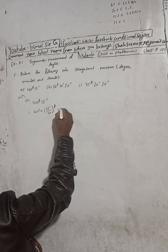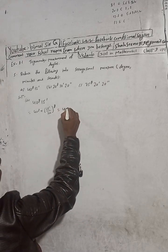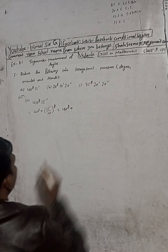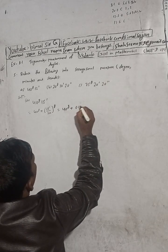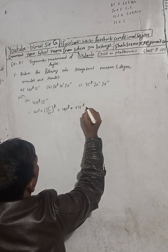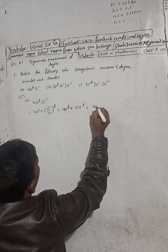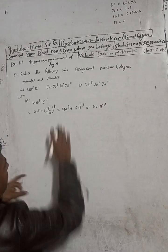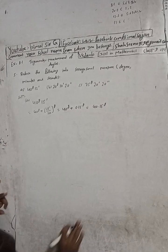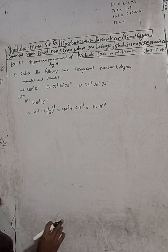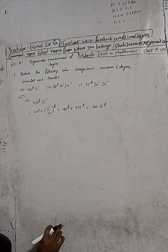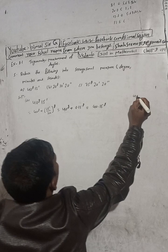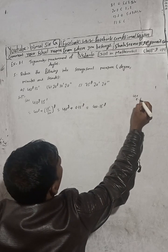40 grade plus 15 — when we cut down, we get 40.15.